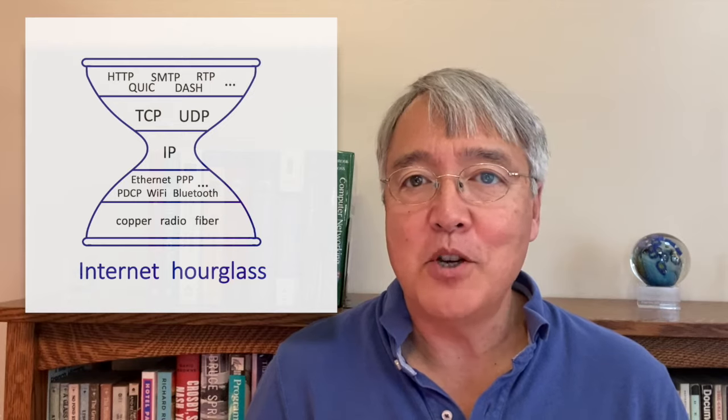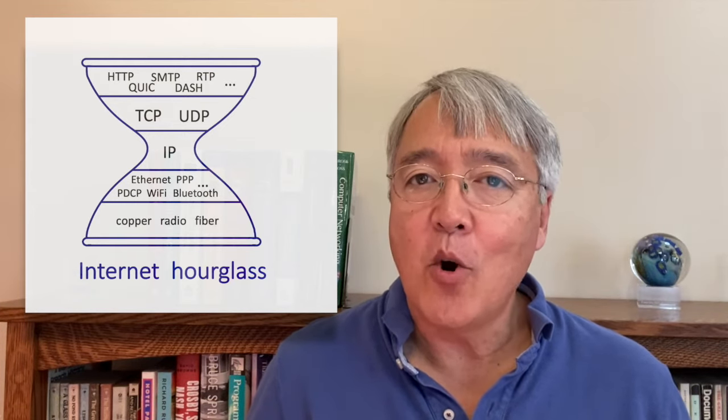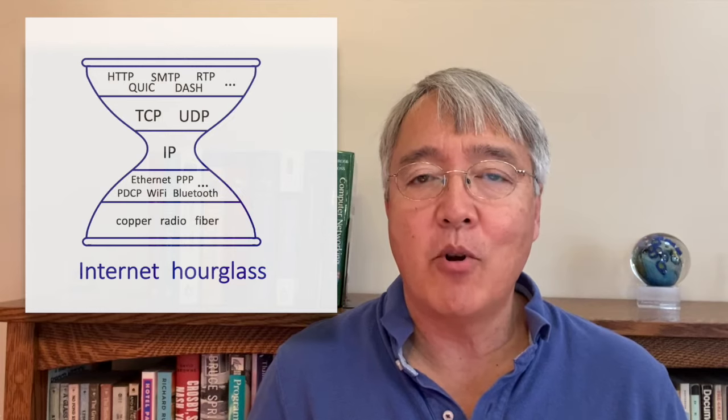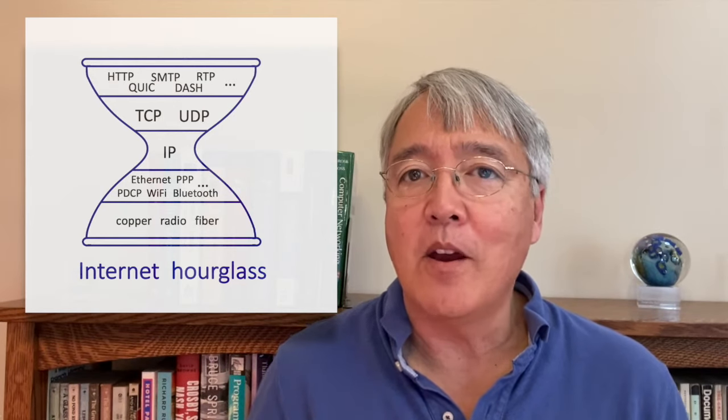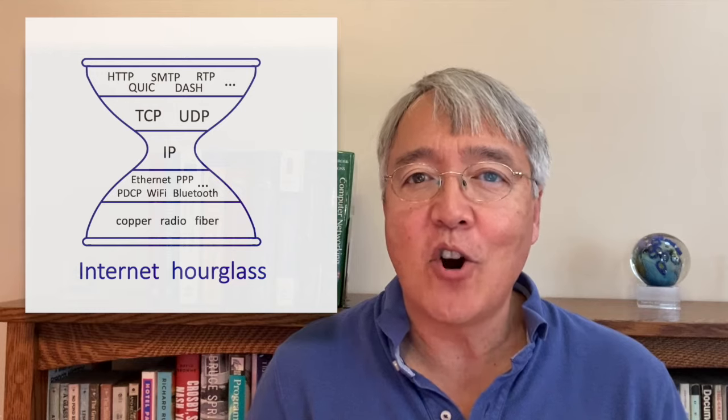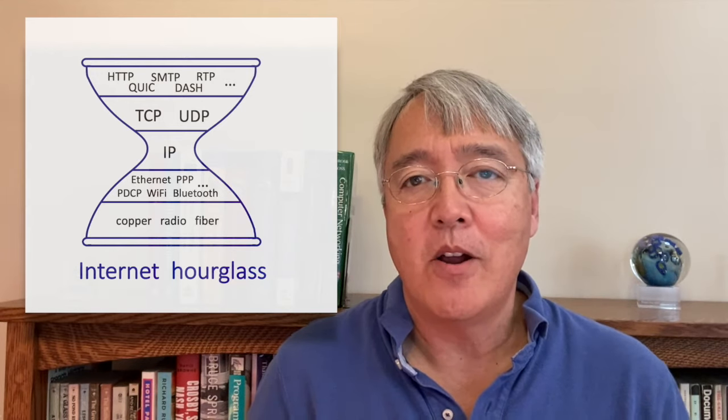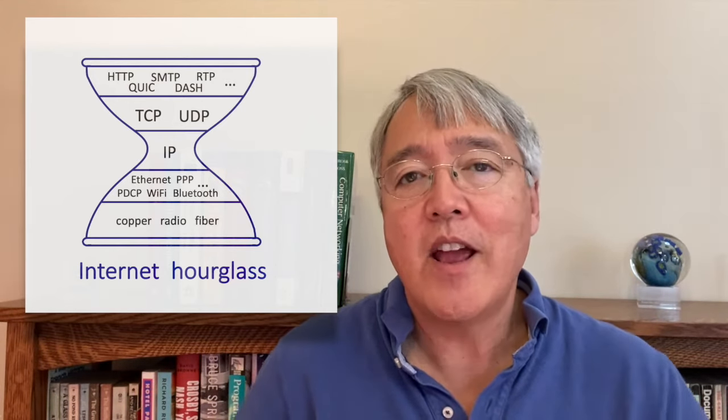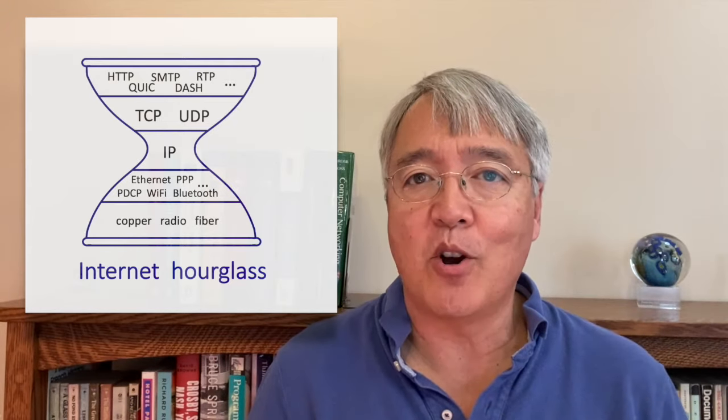Having now looked at some of the principles involved with the link layer, we're ready to take a look at link layer protocols, which themselves are going to introduce issues of both theory and practice. At the network layer, we encountered a relatively small number of protocols, primarily IP, BGP, and OSPF. At the link layer, we're going to see a much larger number of protocols. Generally, this is in keeping with the internet hourglass architecture, with IP and the network layer being the thin waist, and there being more diversity of protocols at the link layer.